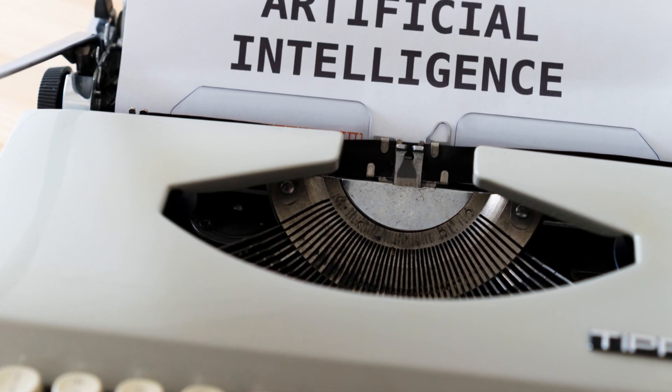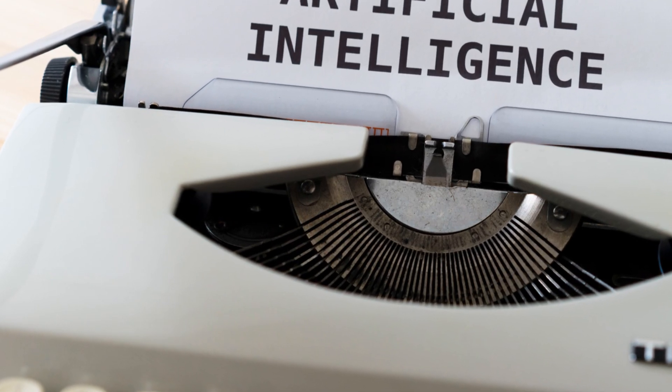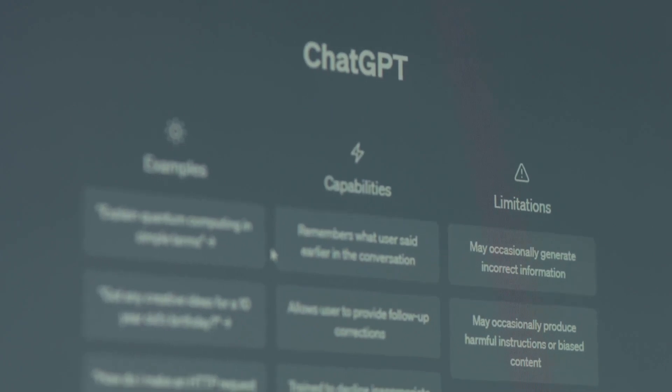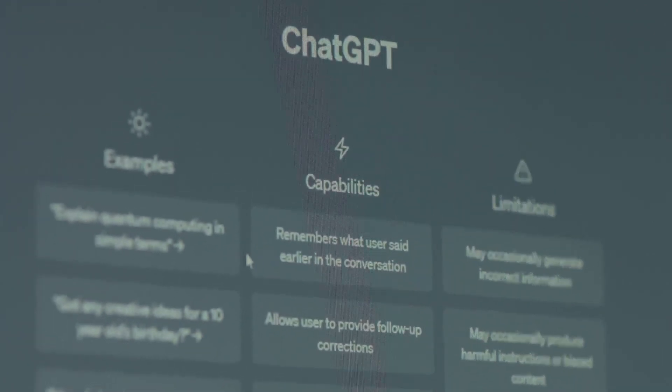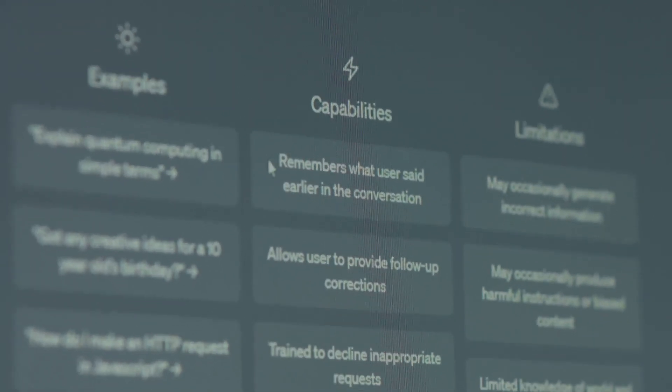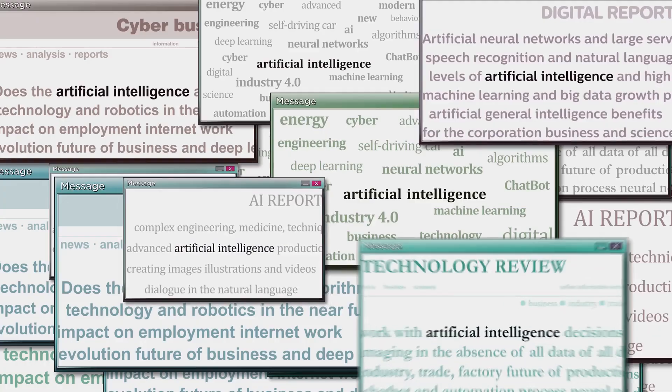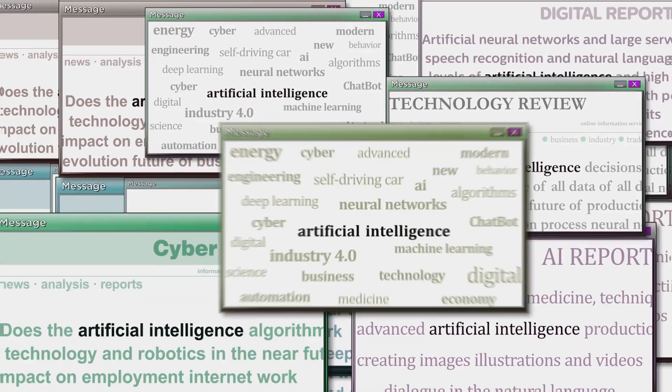Deep learning has achieved remarkable success in various domains. It powers image recognition systems that can identify objects with near-human accuracy. It enables natural language processing models to understand and generate human-like text. The power of deep learning lies in its ability to learn complex patterns from vast amounts of data.